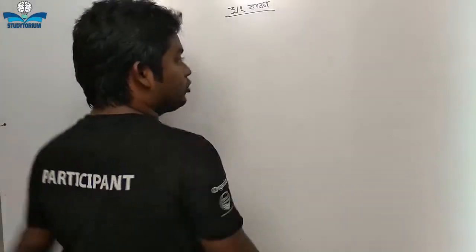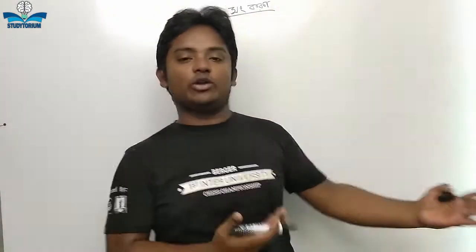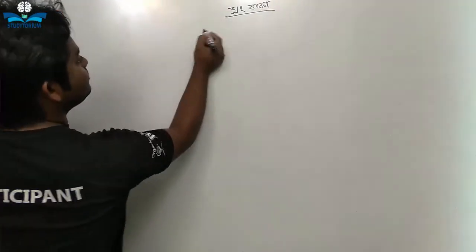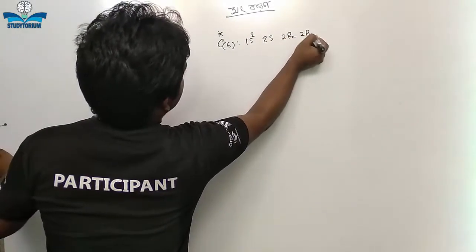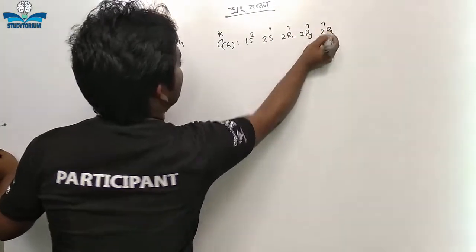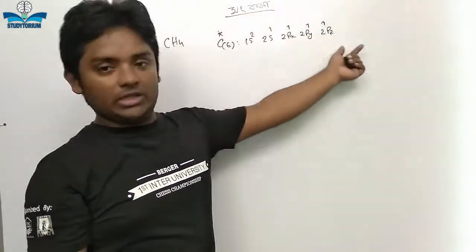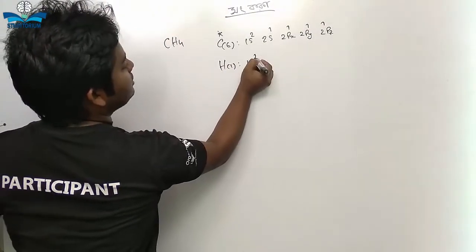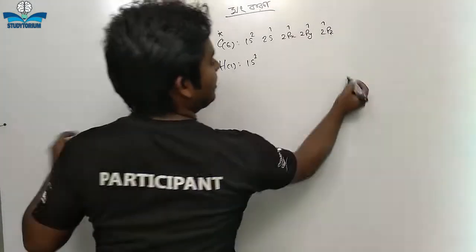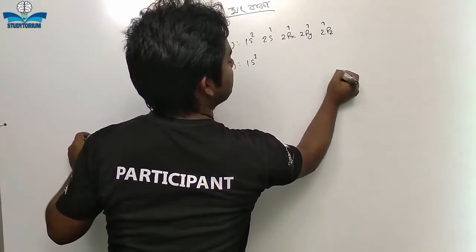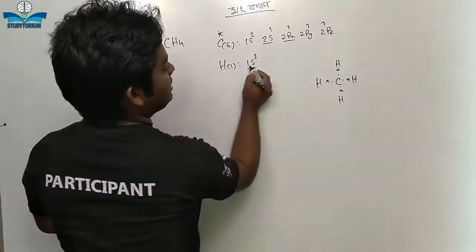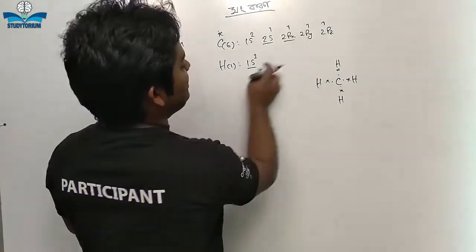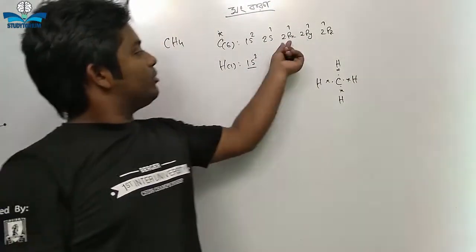Let's start from hybridization. All the information is like this: 2A, meaning which will become 2A.